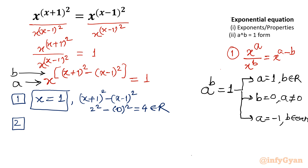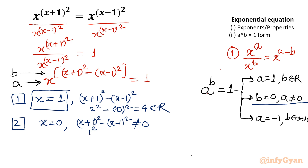Case 2: base equals 0, so x = 0. The power must not equal 0. Let us check (x+1)² - (x-1)² at x = 0: (0+1)² - (0-1)² = 1 - 1 = 0. Since the exponent equals 0, x = 0 is not a solution via this method — but x = 0 remains in doubt.